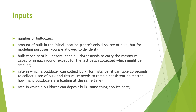The third input is the bulk capacity of bulldozers. Each bulldozer needs to carry the maximum capacity each time it picks up bulk, except possibly the last pickup when less than the maximum capacity may remain. The fourth input is the rate at which a bulldozer can collect bulk — for instance, it may take 20 seconds to collect one ton. This rate must remain consistent no matter how many bulldozers are loading at the same time, and the same rules apply when depositing.